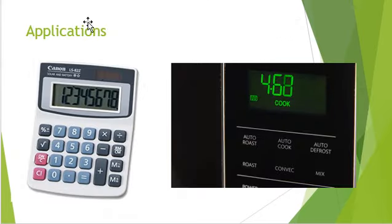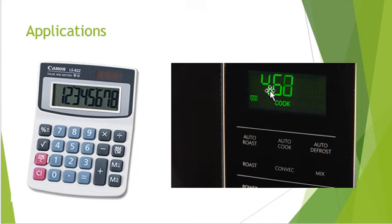Let's move on to the applications of the 7-segment display. Being a display device, it is used in calculators, microwave oven displays, and other electronic devices. It's also used in digital clocks, odometers, and clock radios. Nowadays, most 7-segment applications use LCD modules, where each individual segment is made of an LCD instead of an LED due to lower power consumption.